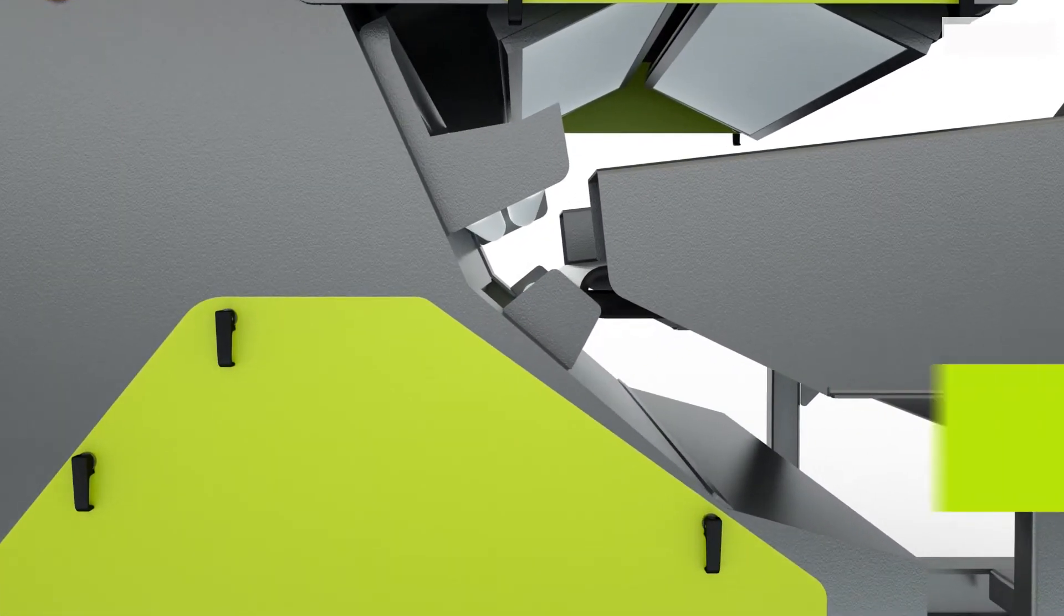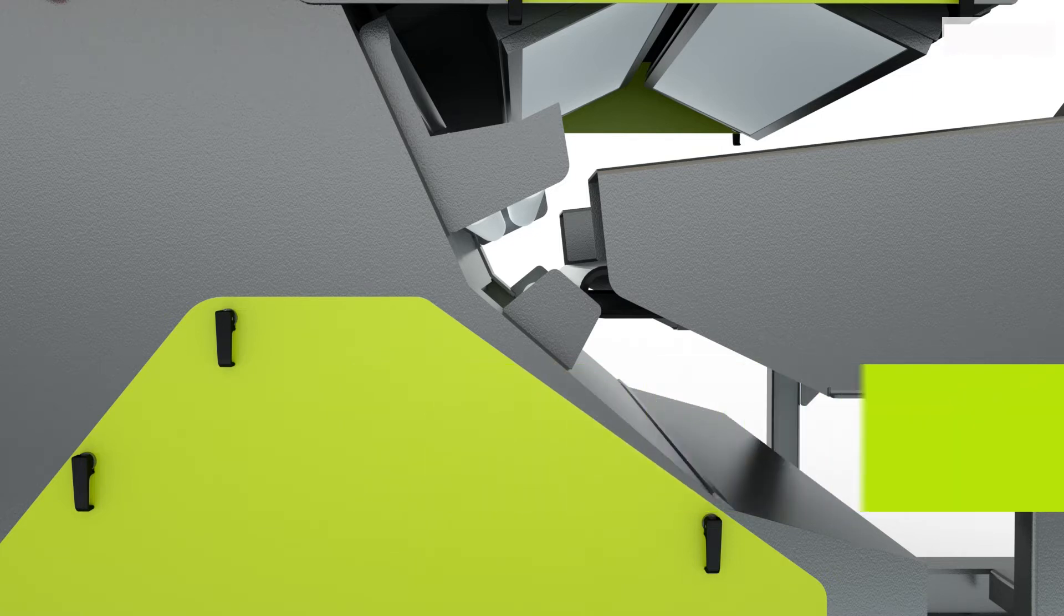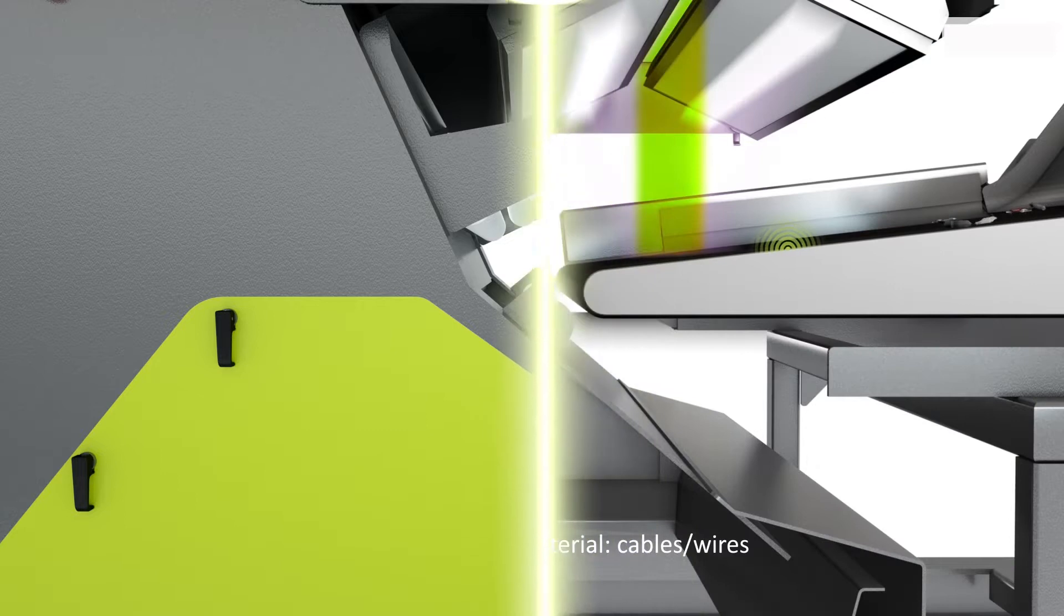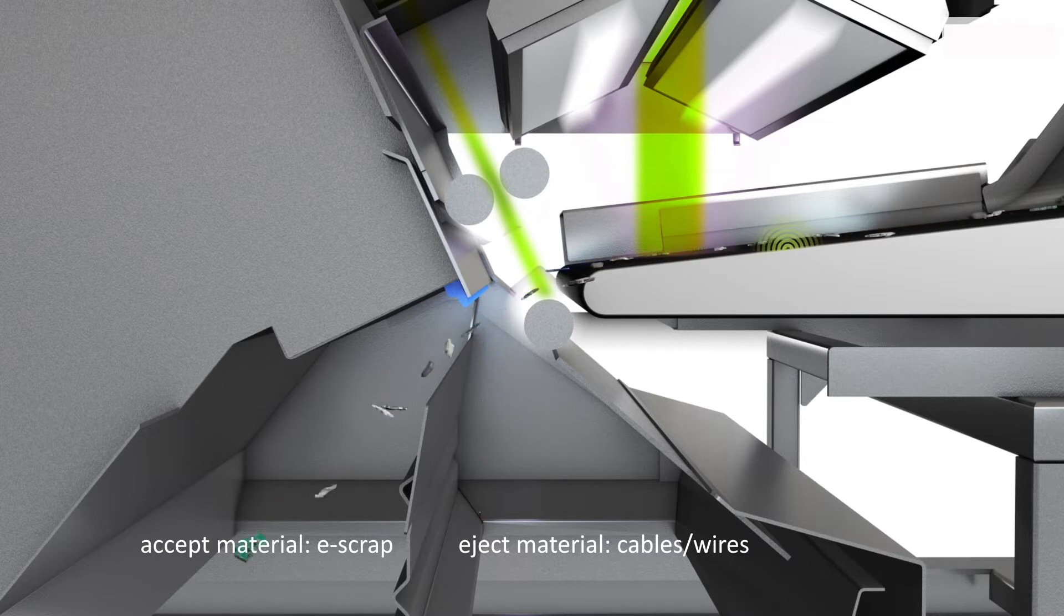In this first application, we combine the all-metal detection coil with the high-resolution shape sensor. The focus here is on a long shape, typical for cables and wires. The cables are ejected from the material stream by using an air ejection unit.